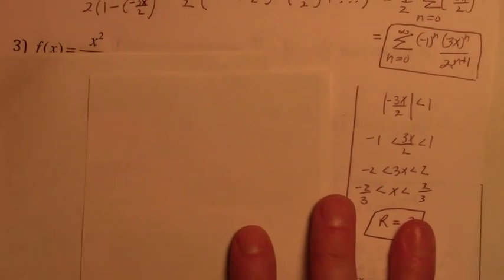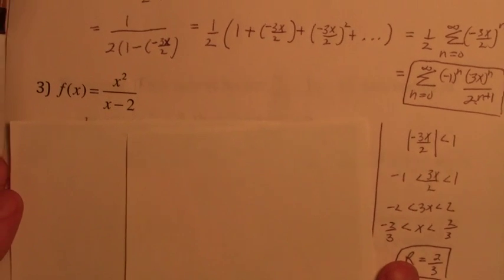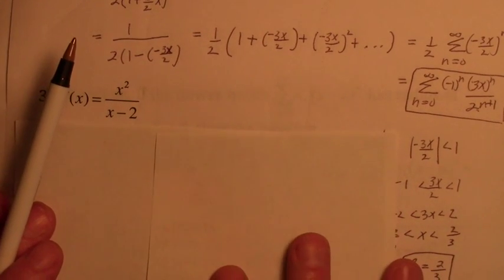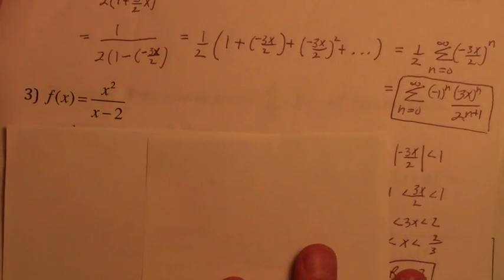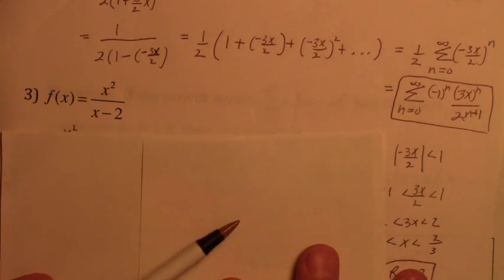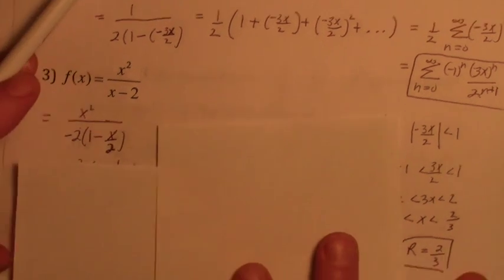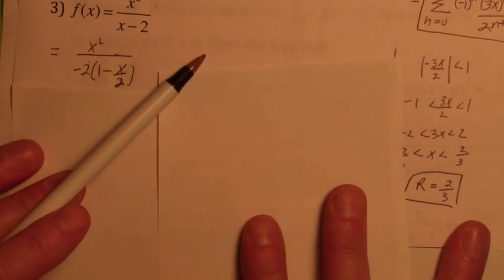They're all rigged — they can all be written in terms of that geometric power series. Don't worry about the x squared on the top; we'll see what to do with that in just a second. You have to have a 1 minus x or 1 minus something. As long as you have 1 minus something or 1 plus something, you can use that pattern.